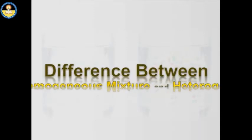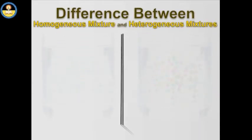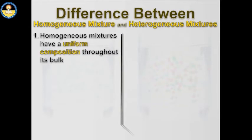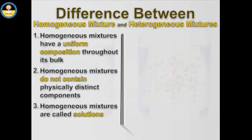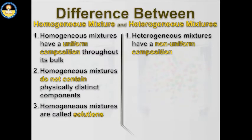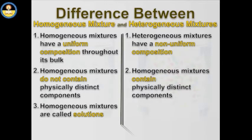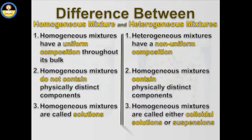Let us now learn about the difference between homogeneous and heterogeneous mixtures. Homogeneous mixtures have a uniform composition throughout their bulk and do not contain physically distinct components — they are called solutions. Heterogeneous mixtures have a non-uniform composition, contain physically distinct components, and are called either colloidal solutions or suspensions.